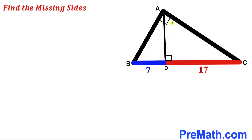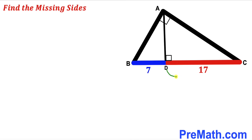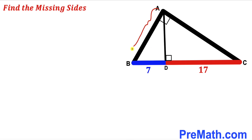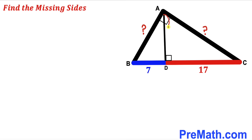Welcome to PreMath. In this video, we have got this right triangle ABC along with this perpendicular AD. As you can see in this given diagram, segment BD length is 7 units, whereas segment CD length is 17 units. Our task is to find all the missing side lengths — side length AB, side length AC, and perpendicular AD.